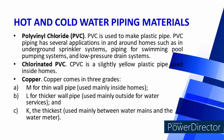Hot and Cold Water Piping Materials: Polyvinyl Chloride (PVC) is used to make plastic pipe with applications such as underground sprinkler systems, swimming pool pumping systems, and low-pressure drain systems. Chlorinated PVC (CPVC) is a slightly yellow plastic pipe used inside homes. Copper comes in three grades: Type M for thin wall pipe used mainly inside homes; Type L for thicker wall pipes used mainly outside for water services; and Type K, the thickest, used mainly between water mains and the water meter.